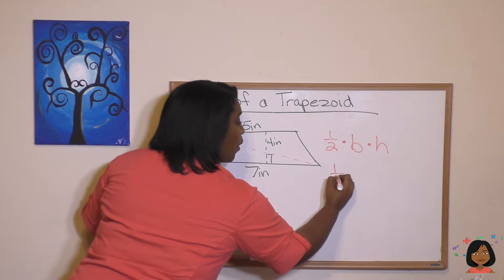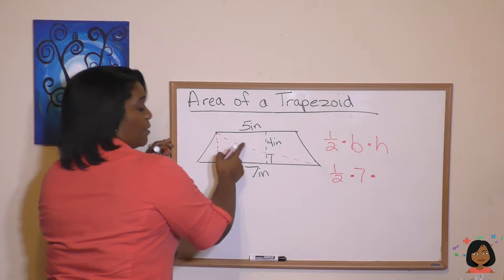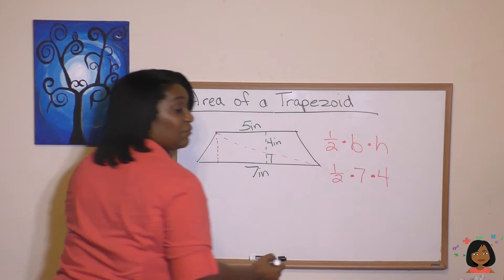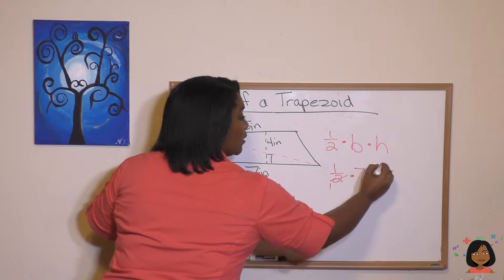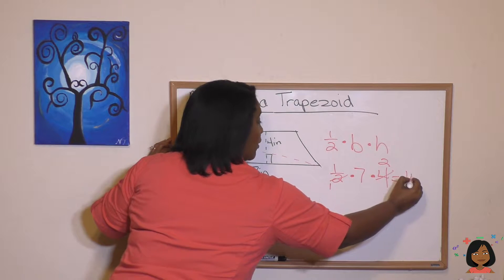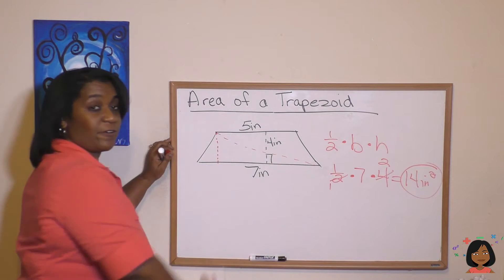So let's fill it in. One half times the base, seven, times the height, four. And now let's clean it up a little. Two goes in here. Two is left over. And we have 14 inches squared. Now that's just for the first triangle.